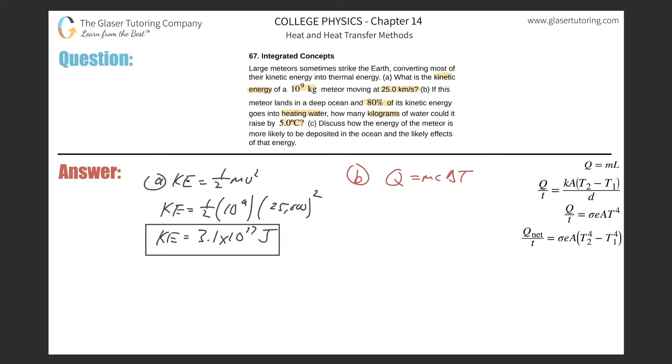So why don't we just do that right off the bat? So the mass is equal to the energy divided by C delta T. Okay, specific heat of water. So what's the energy?